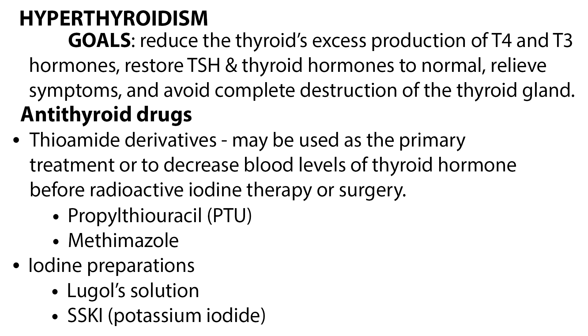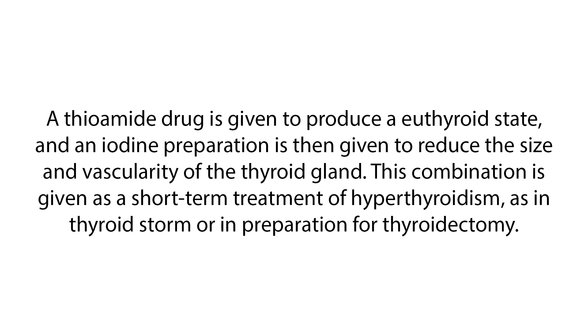Antithyroid drugs include thioamide derivatives and iodine preparations. Thioamide derivatives include propylthiouracil or PTU and methimazole. Iodine preparations include Lugol solution and SSKI or potassium iodide. Thioamide drugs may be used as the primary treatment or to decrease blood levels of thyroid hormone before radioactive iodine therapy or surgery. A thioamide drug is given to produce a euthyroid state, and an iodine preparation is then given to reduce the size and vascularity of the thyroid gland. This combination is given as a short-term treatment of hyperthyroidism, as in thyroid storm or in preparation for thyroidectomy.